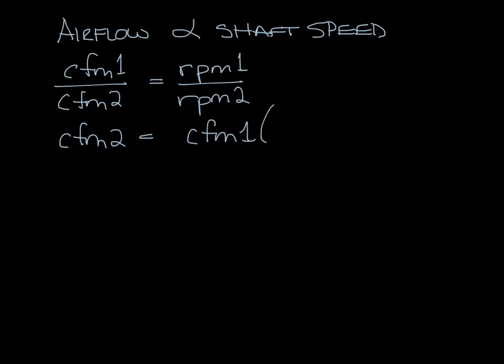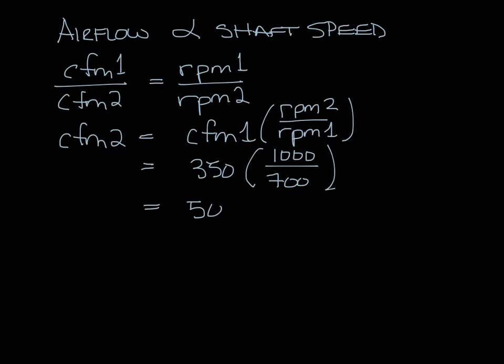So that would be CFM1 times RPM2 divided by RPM1. So let's say we have 350 CFM at 700 RPM and we want to go to 1000 RPM. And that would give us 500 CFM.